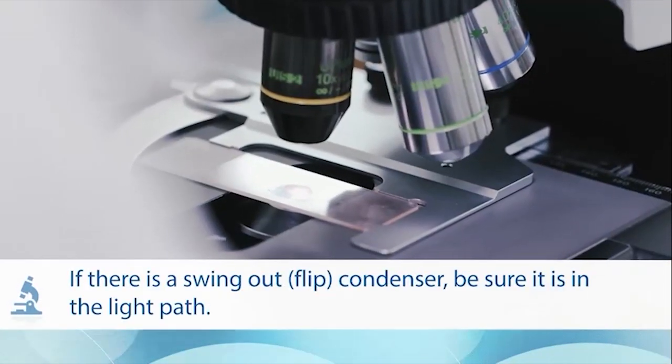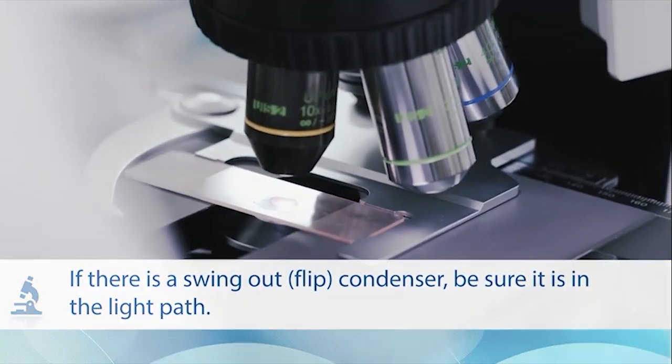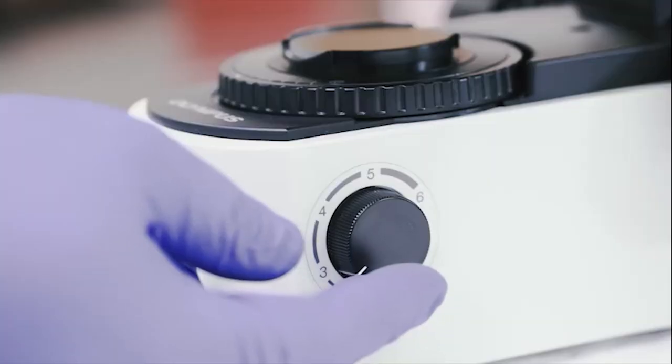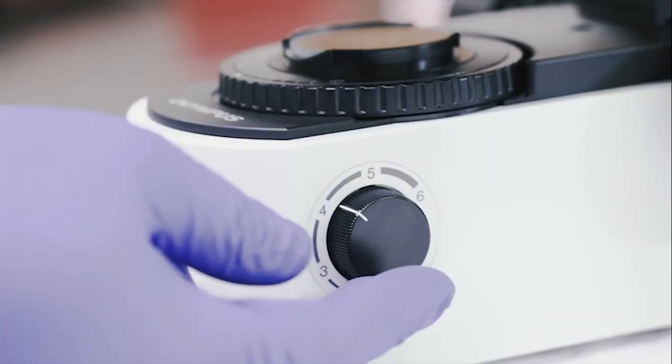If there is a swing out or flip condenser, be sure it's in the light path. Adjust the intensity of the illumination to a comfortable level using the light source knob.